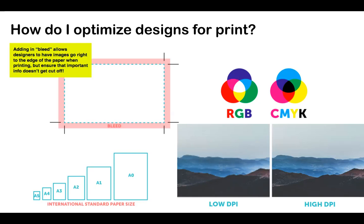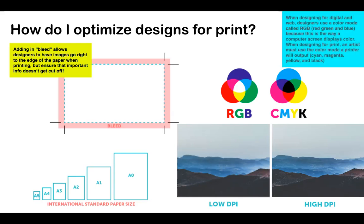We want to make sure all the text and important info stays inside the margin. When designing for digital and web, designers use RGB because that's how a computer screen displays color. When designing for print, an artist must use the color mode a printer will output — cyan, magenta, yellow, and black.